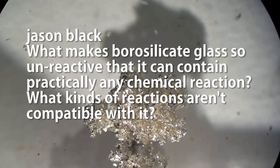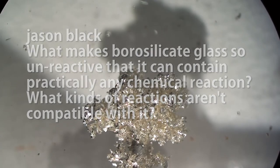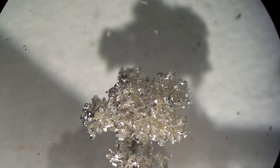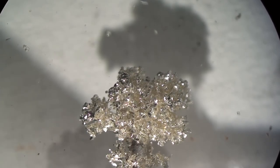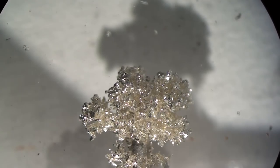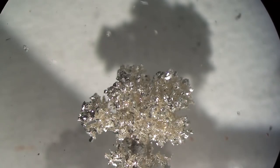Okay, next question. Jason Black asks, what makes borosilicate glass so unreactive that it can contain practically any chemical reaction? What kinds of reactions aren't compatible with it? Okay, the silicon-oxygen bond in glass is extremely strong and stable. A tremendous amount of energy is released when silicon combines with oxygen. So to reverse that reaction requires an equally tremendous amount of energy. There are very few other chemicals that react with silicon or oxygen that produce more stable compounds. So thus, glass is very unreactive.